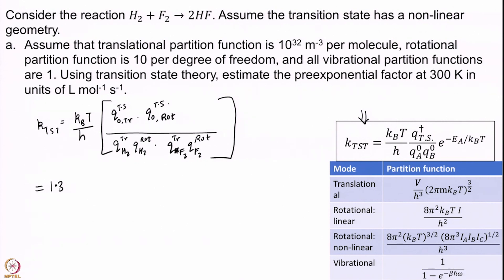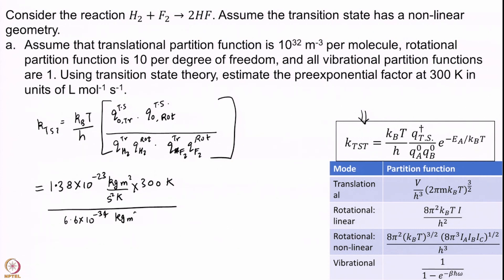k_B is 1.38×10^-23 kg·m²·s^-2·K^-1 times 300 K, divided by h = 6.6×10^-34 kg·m²·s^-1. The translational partition function per molecule is 10^32 m^-3. The transition state is one molecule, so its translational partition function is 10^32. The transition state is non-linear, which has 3 rotational degrees of freedom, so the rotational partition function is 10×10×10 = 10^3. H2 is linear with 2 rotational degrees of freedom, giving 10^2. F2 is also linear, so it also gives 10^32 m^-3 times 10^2.